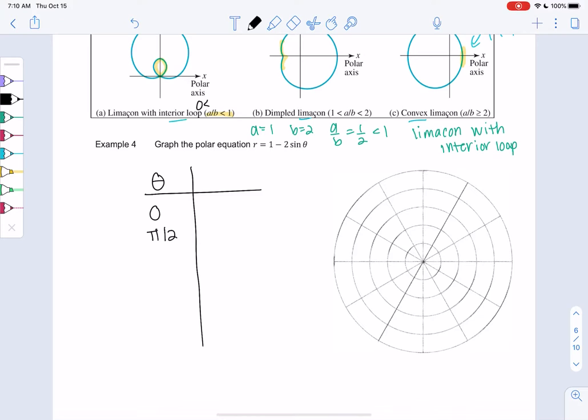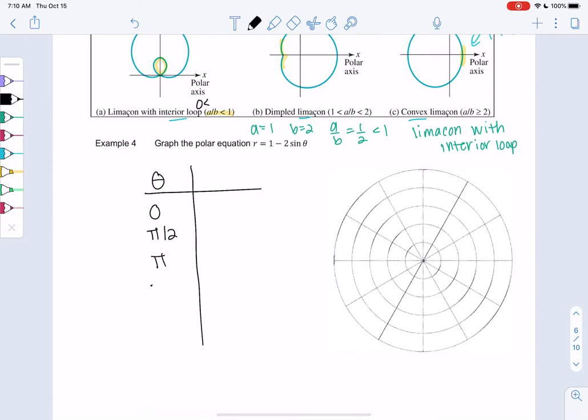Zero, pi over two, pi, and three pi over two. And two pi should be the same as zero, but we can check that out. And r equals one minus two sine theta. So to get some practice with your unit circle, why don't you pause the video and start plugging these numbers in. So we'll plug in zero for theta, pi over two for theta, and so on.